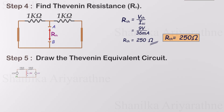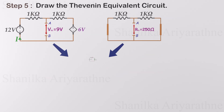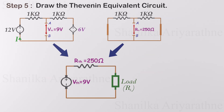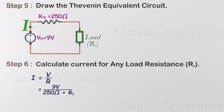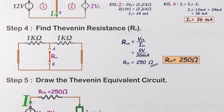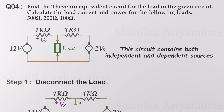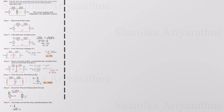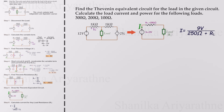Now that we have both the Thevenin voltage and Thevenin resistance, we can construct the Thevenin equivalent circuit and analyze it for any load. To summarize: first, calculate the variable term controlling the dependent sources with terminals A and B open to determine the Thevenin voltage. Second, to find the Thevenin resistance, short circuit terminals A and B, calculate the short circuit current, and then divide the Thevenin voltage by this short circuit current. This method allows you to simplify complex circuits for easier analysis.